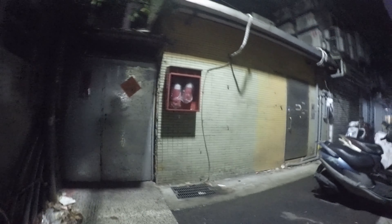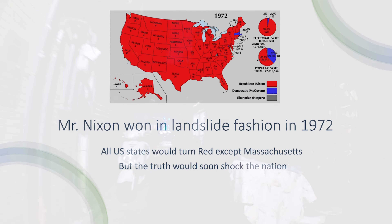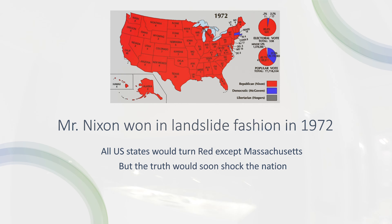But it turns out that in the fall of 1972, Mr. Nixon actually won in landslide fashion — this was actually the second largest victory in US history. The only president who would top this was Ronald Reagan, who also won 49 out of 50 states, with the exception of Minnesota. In the 1972 election, Richard Nixon won 49 out of 50 states as a Republican. The only state he would lose was Massachusetts and its 14 electoral college votes. But the truth would soon come out, and this would shock the nation.